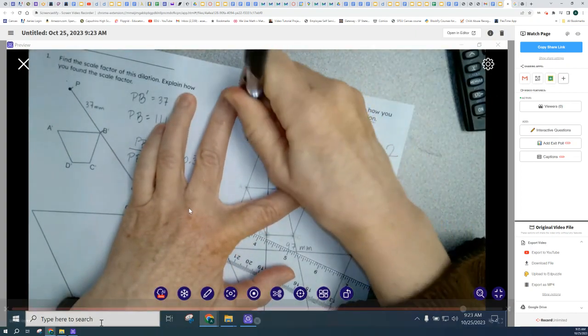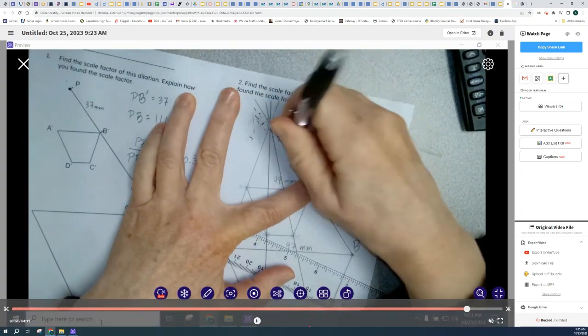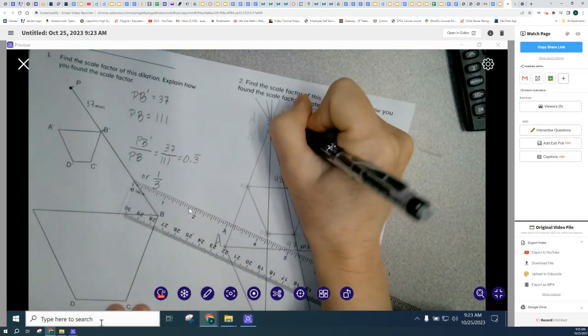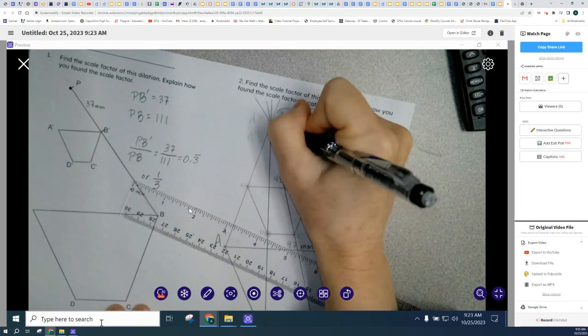And of course, I had accidentally written part of my work where the point of dilation is. So I'm just going to move that out of the way. And that was my point of dilation, which I'm calling point P.